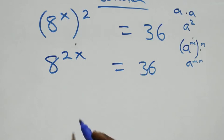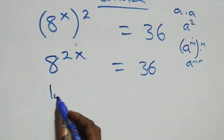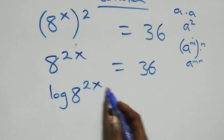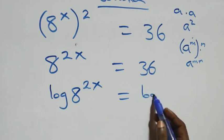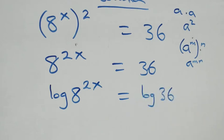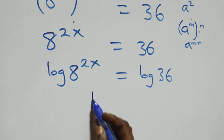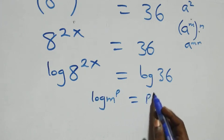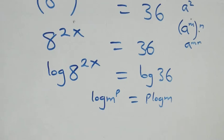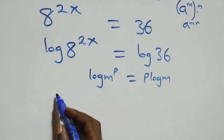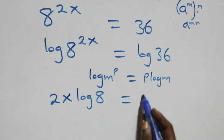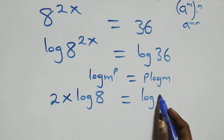Next step, we take the log on both sides. That is, we have log of 8 raised to power 2x equals log 36. We apply the power rule of logarithms: log m raised to power p is the same as p log m. So this becomes 2x log 8 equals log 36.